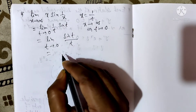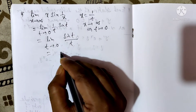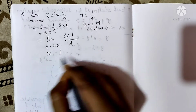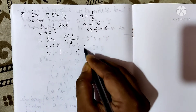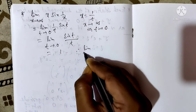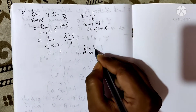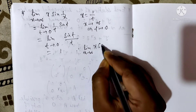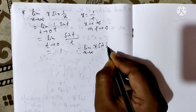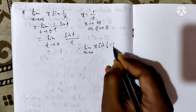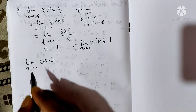That equals 1. Therefore, the limit as x tends to infinity of x·sin(1/x) equals 1.